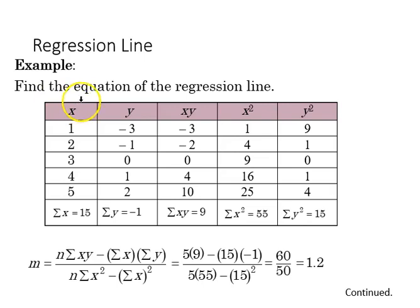Here's an example where we'll find the equation of the regression line. We have x, y, xy products, x², and y², with the sum of those values in the bottom row. Plugging these numbers into our equation, we get m = 1.2.